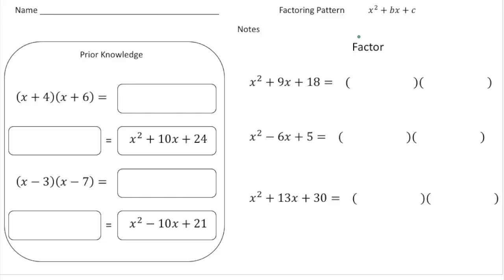Our goal is to factor a trinomial like x squared plus 9x plus 8. But before we do that, let's go back to what we already know and multiply x plus 4 times x plus 6. You should know by now that to do that you need to follow FOIL. So x times x gives us x squared, 4 times 6 gives us 24, and the outside and inside: 6x and 4x together give us 10x.